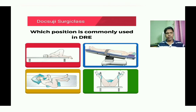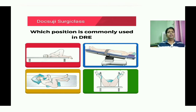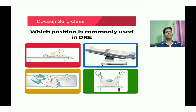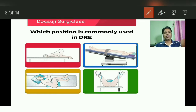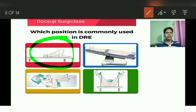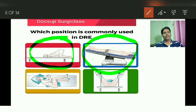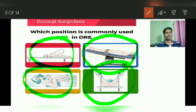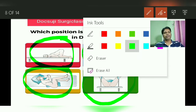Which position is commonly used in DRE? DRE stands for digital rectal examination. Here you can see four options. The first is the knee elbow position or knee chest position. The second option is the Trendelenburg position. Number three is the Sims position, and number four is the lithotomy position. So these are the four positions.